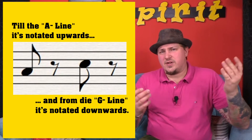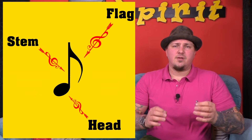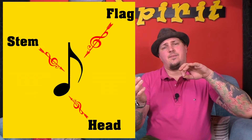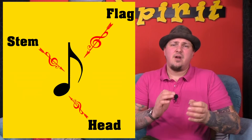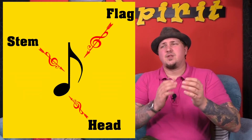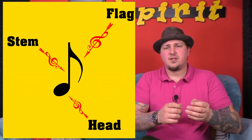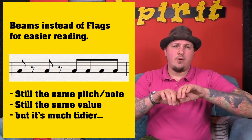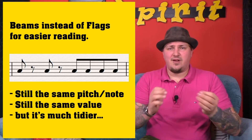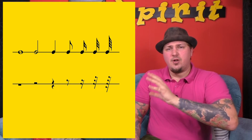It's easier to read. Some notes have flags — it shows the value of the note, whether it's an eighth note or sixteenth note. If you have two neighbor eighth notes or sixteenth notes, or four of them, they are notated with beams instead of flags. This is for easier reading.